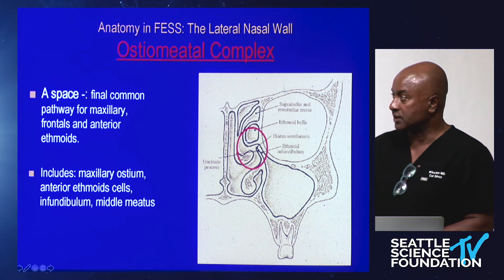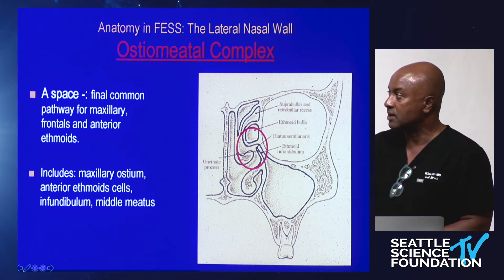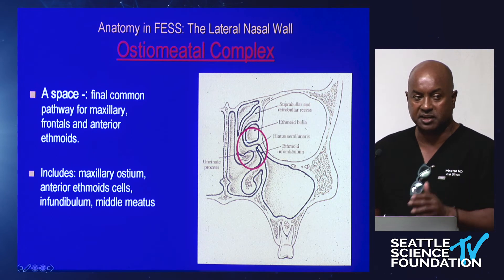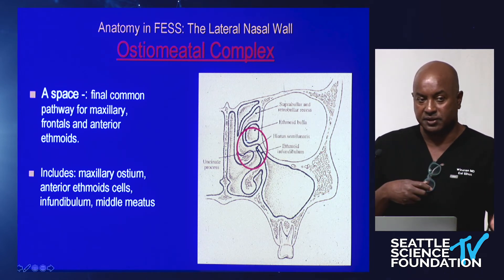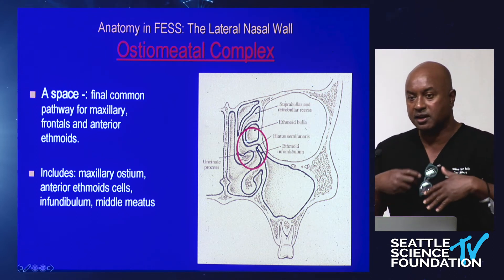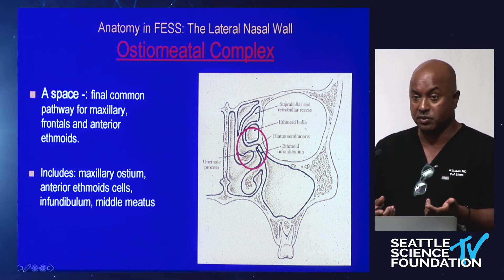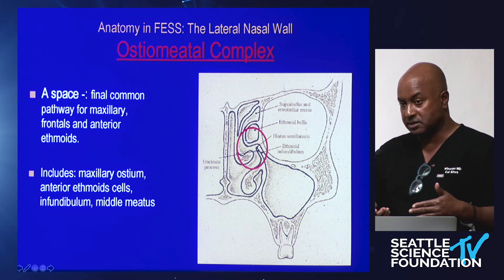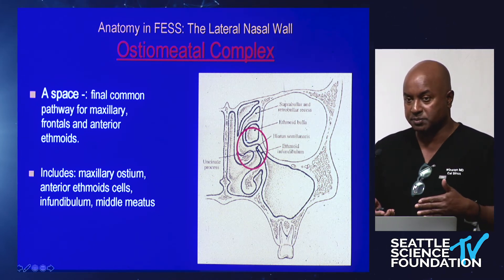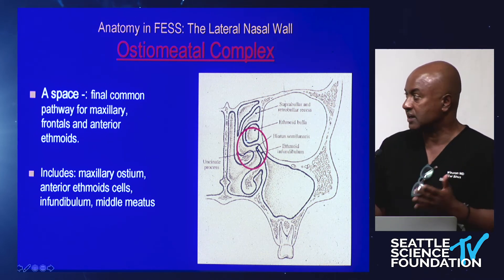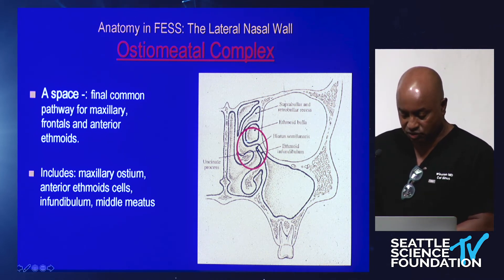Once you've done your maxillary dissection and uncinectomy, you have the ethmoid bulla, and going between the middle turbinate and the ethmoid bulla reveals planes of dissection. Think about this the same way as neck dissection — finding the sternocleidomastoid and working between tissue planes. Find the plane of dissection between the middle turbinate, the middle turbinate basal lamella, the ethmoid, and the space between your posterior ethmoids and superior turbinate. Finding these planes makes the surgery much easier.